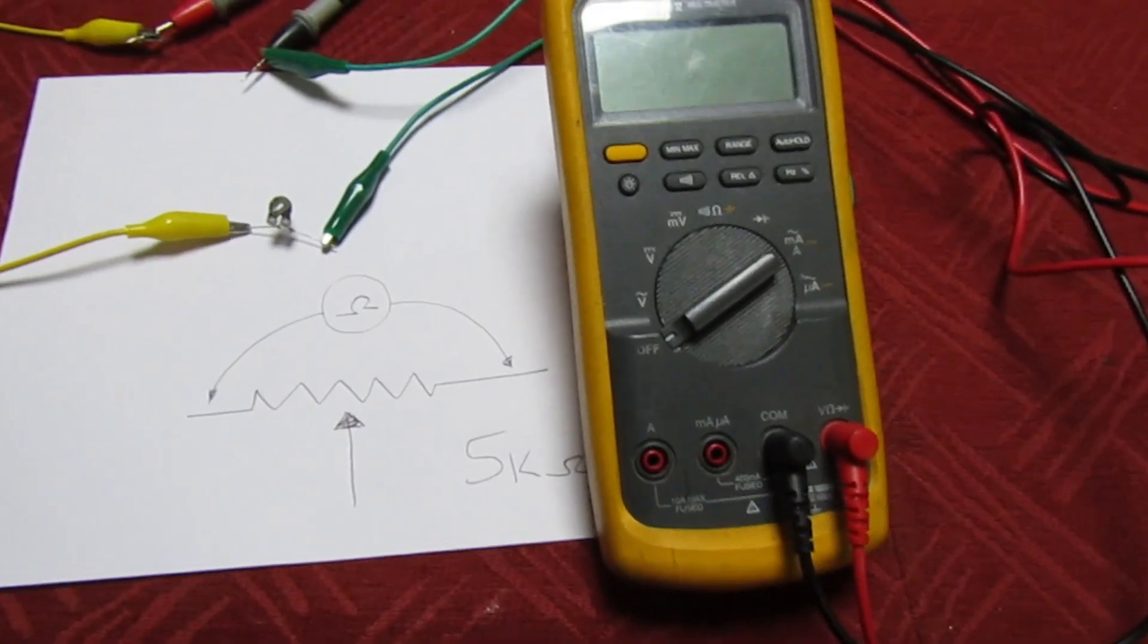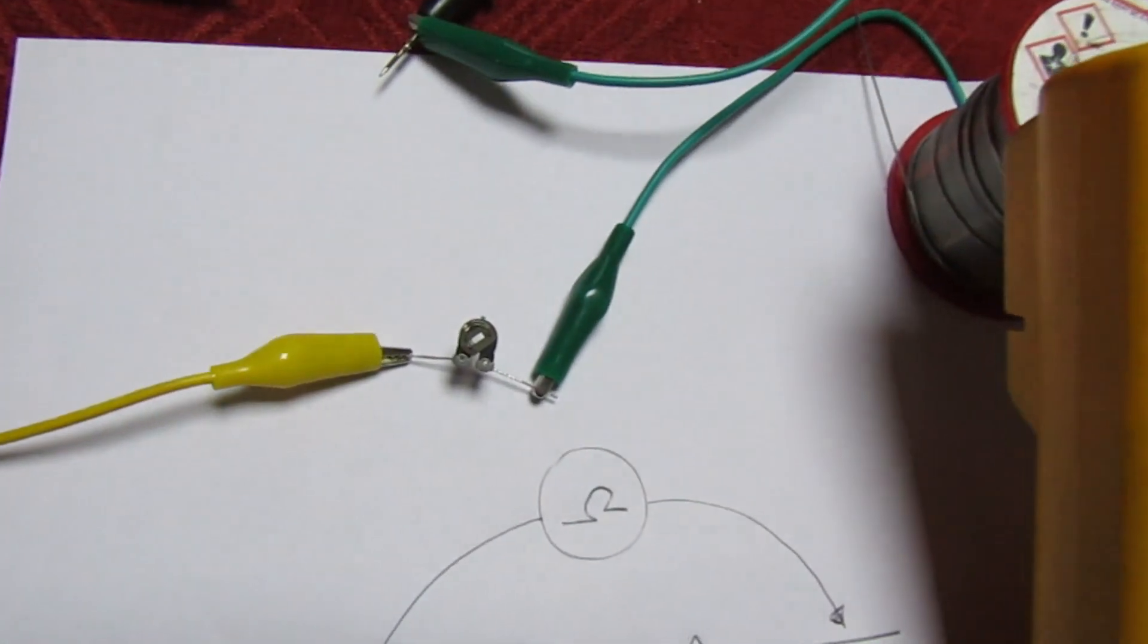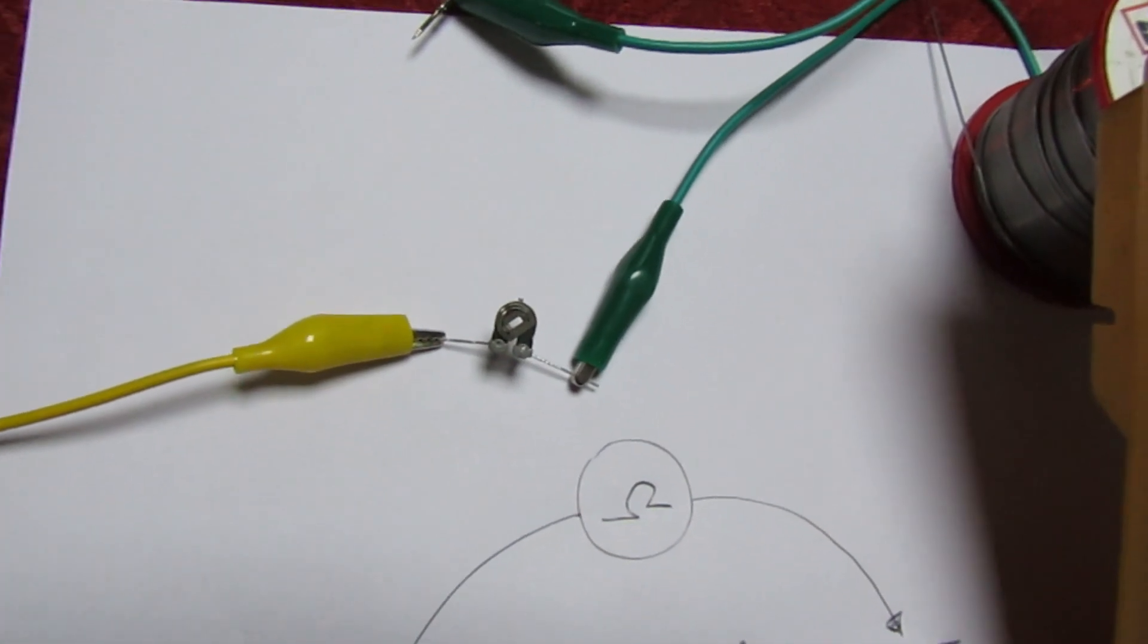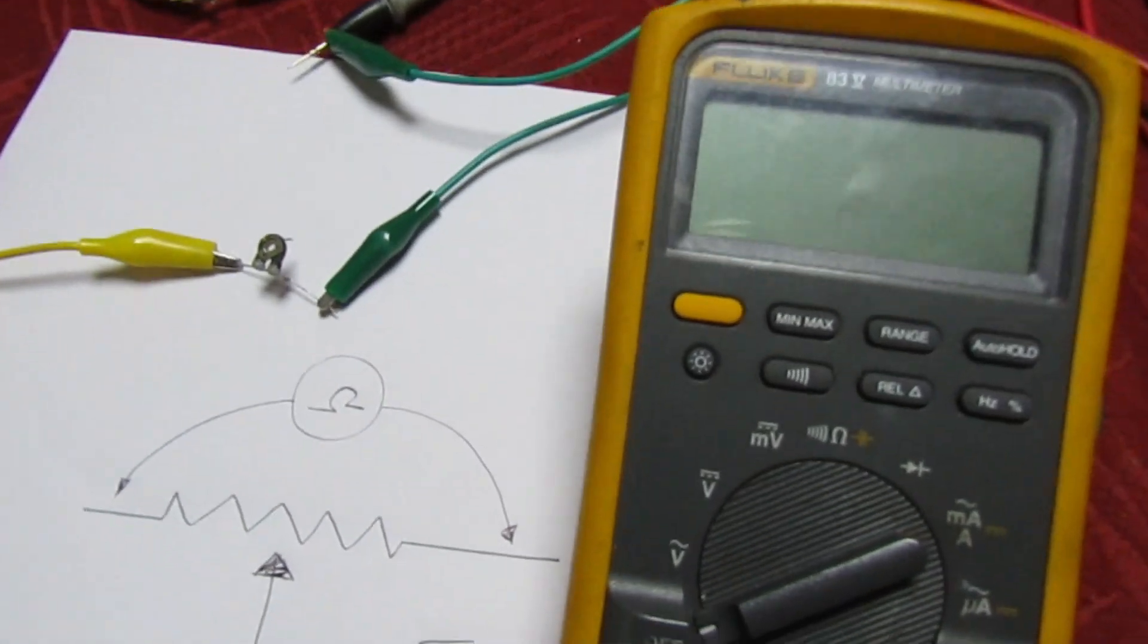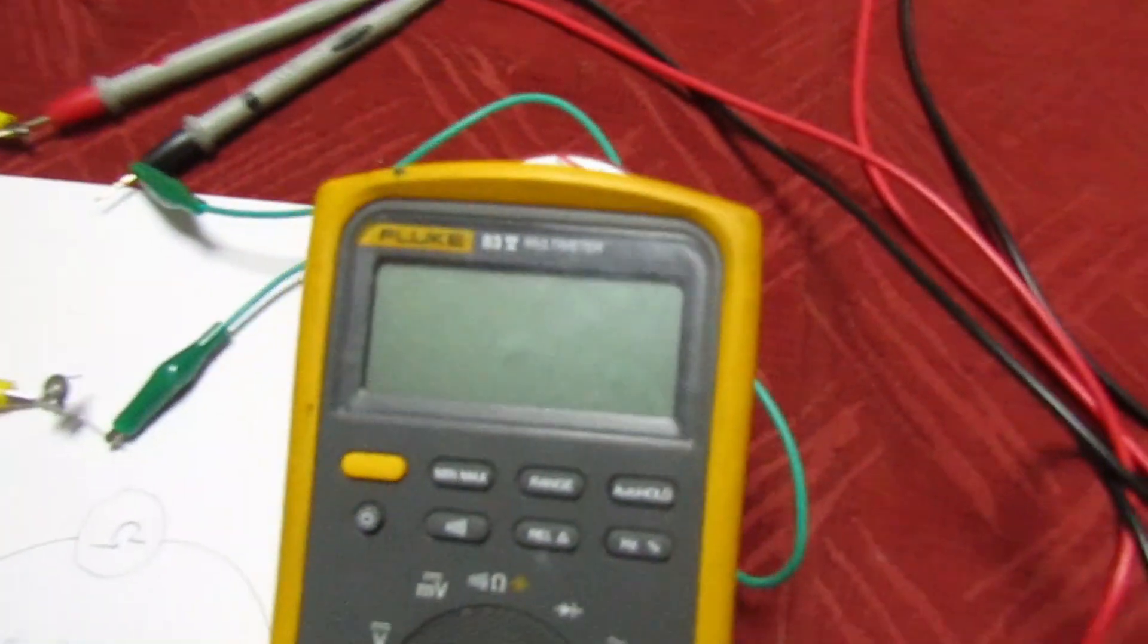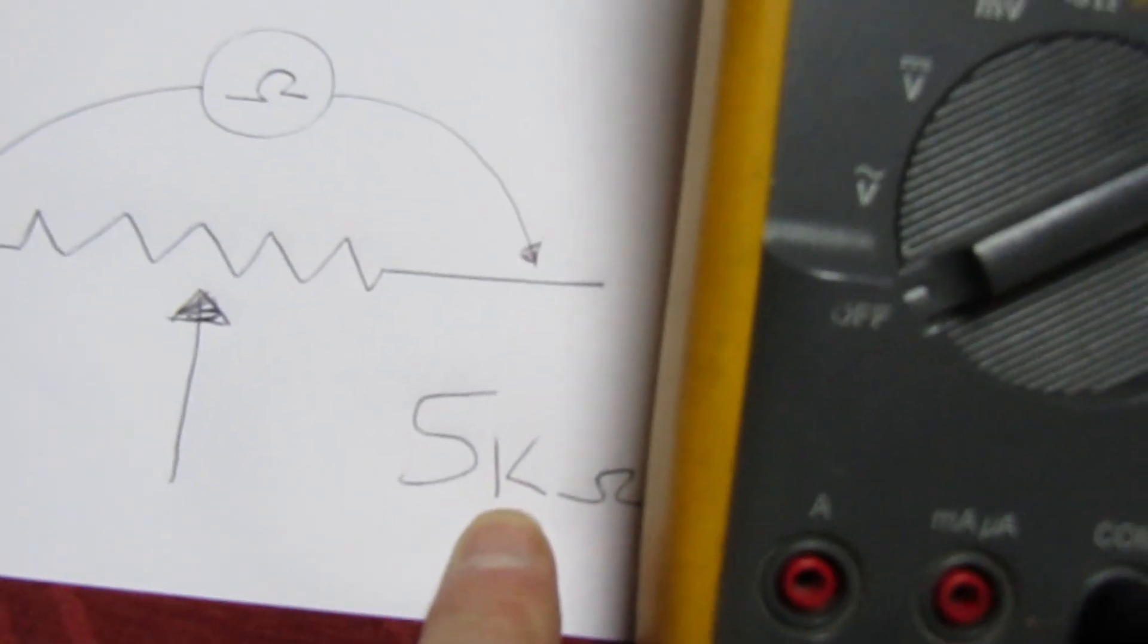All right, so there we go, connected to a simple digital multimeter, each end just like in that diagram. Let's turn it on. Bearing in mind this is a 5K ohm preset.